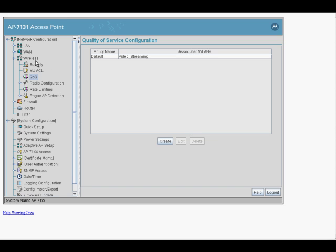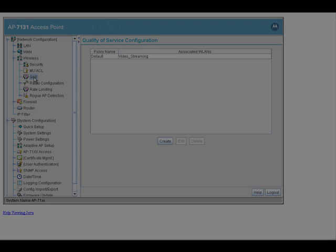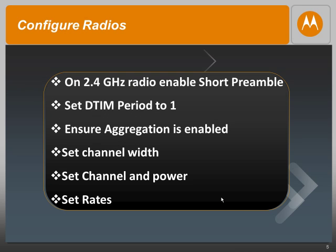So we have created our wireless LAN and we have set the right QoS policy for our wireless LAN as well. To configure the radios, the first parameter we need to set is a short preamble if it is a 2.4GHz radio — this parameter is not available in 5GHz. We have to ensure that the DTIM period is set to 1, aggregation is enabled, and the channel width is set. There are two options for channel width: 20MHz and 20/40MHz. For our demo we are going to be using 20/40MHz. The channel and power have to be set to the optimum value, and finally we have to set the rates.